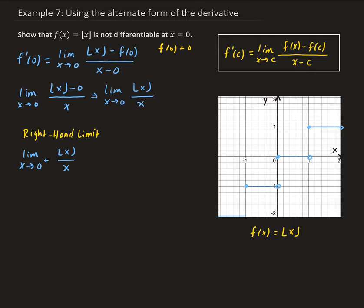So in the numerator, as x approaches 0 from the right, the floor function is going to be 0. However, in the denominator, as x is approaching 0 from the right, this is getting smaller and smaller. So we have a fixed number, 0, divided by something getting smaller and smaller. That means we're going to end up getting 0, because we have 0 in the numerator divided by something very small. So the overall result is that we get 0.